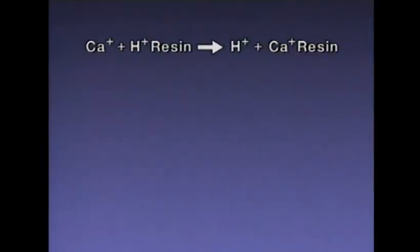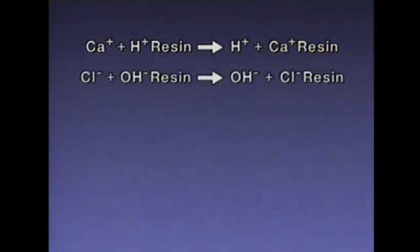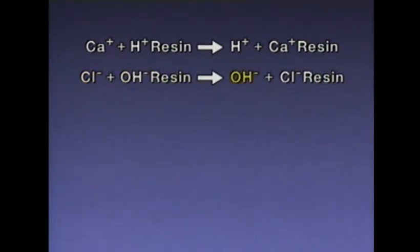To represent this reaction with an equation, we can say that a calcium ion plus a hydrogen-charged resin yields a hydrogen ion plus a calcium-charged resin. The chloride ions are removed in the same way, except that resin charged with hydroxyl ions is used. In this reaction, a chloride ion plus a hydroxyl-charged resin yields a hydroxyl ion and a chloride-charged resin.